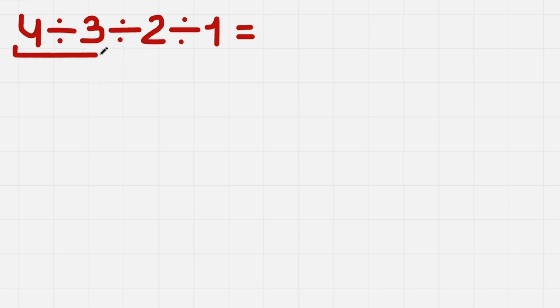So let's do 4 divided by 3. Let's write it like this: 4 divide 3. We'll leave it as a fraction, because if we divide, we'll get a bad decimal.